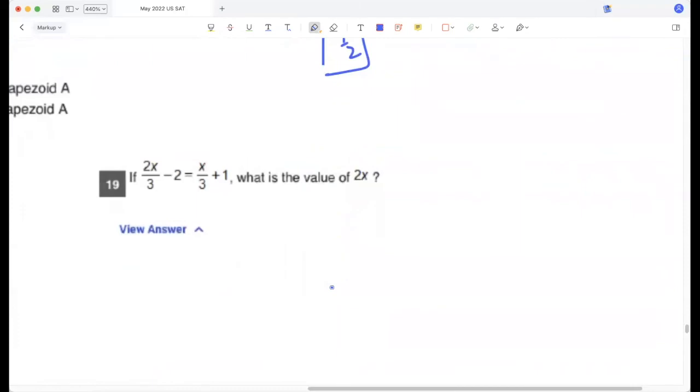If this is true, what is 2x? 2x minus 2x/3 minus 2 is x/3 plus 1. So 2x/3 minus x/3 is 3. So x/3 is 3, so x is 9, so 2x is 18.